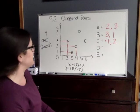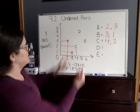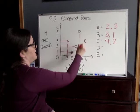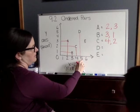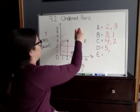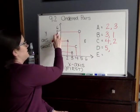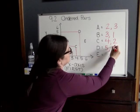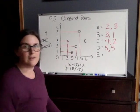Next we're at D. D is up here. So D is at number 5, 5 comma and then our y-axis is also 5. So it would be 5 comma 5.